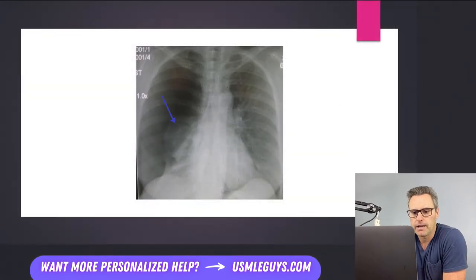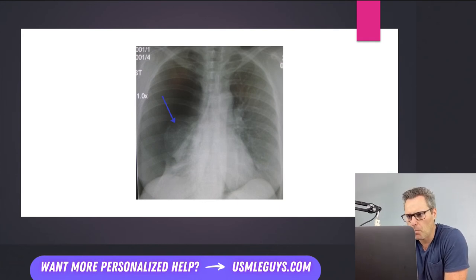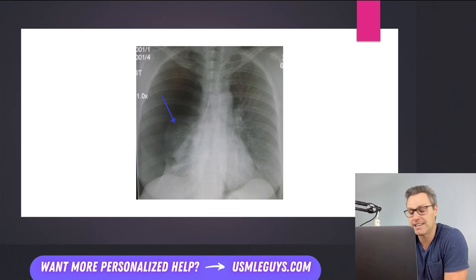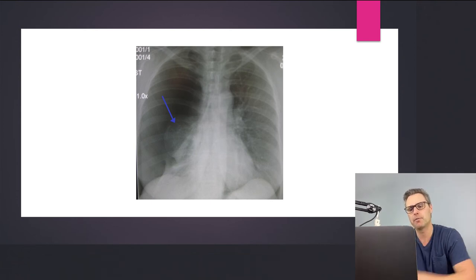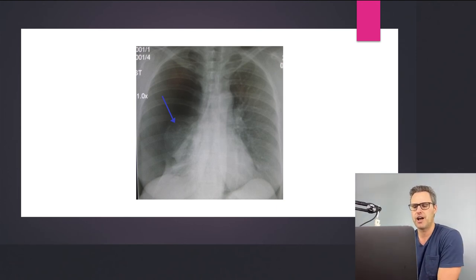Here's a chest x-ray showing a large pneumothorax in the right lung. The key difference between a typical pneumothorax and a tension pneumothorax is that the tension pneumothorax will show displacement of the trachea away from the side of the lesion, whereas a normal pneumothorax won't necessarily show that finding.